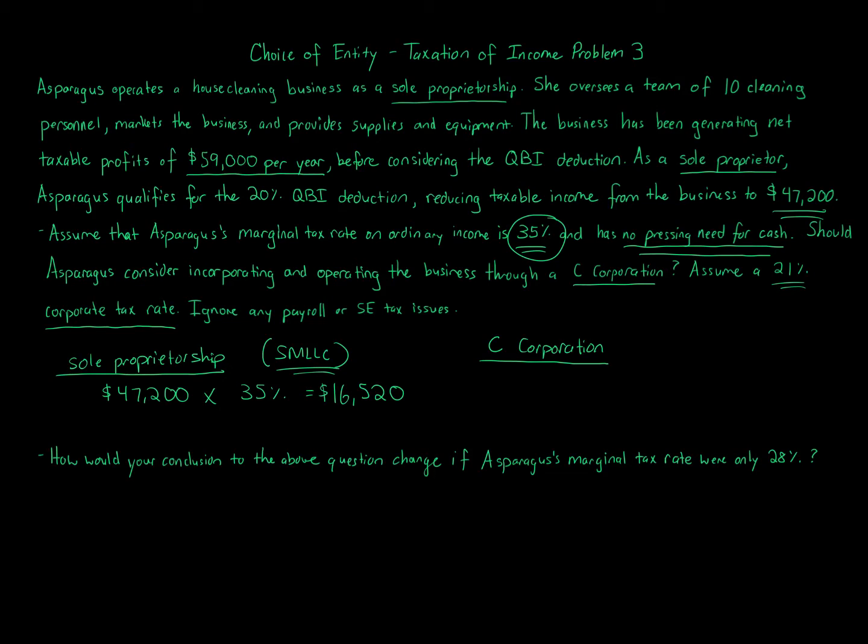For C corporation we don't take the $47,200 because the QBI deduction is not available for C corporations. That's the whole purpose of what it's about. We take the $59,000 per year, but the good news is that C corporation has a lower rate of 21%. So if we take $59,000 times 21%, this is the first level of tax that the C corporation pays, and that's going to be $12,390 annually of taxes.